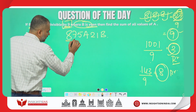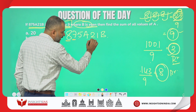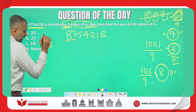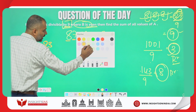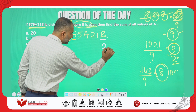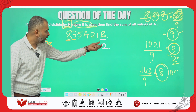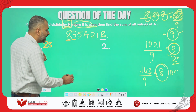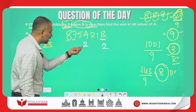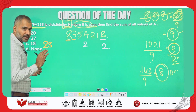For our number 875a21B: 8+7+5+2+1 = 23. The sum of the fixed digits is 23. If B is even and we try B=2: 23+2=25. At the place of A, we need 2 more to reach 27. So A=2 when B=2.